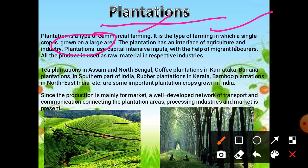Plantation has an interference of agriculture and industry. For example, tea is a plantation crop — we produce tea leaves through agriculture, but then drying and processing requires industrial work. Similarly, sugar cane is first an agricultural crop, and for producing sugar we need the industry. That is why plantation involves an interference of agriculture and industry. It requires capital-intensive inputs, migrant labor, and is done on large farms.